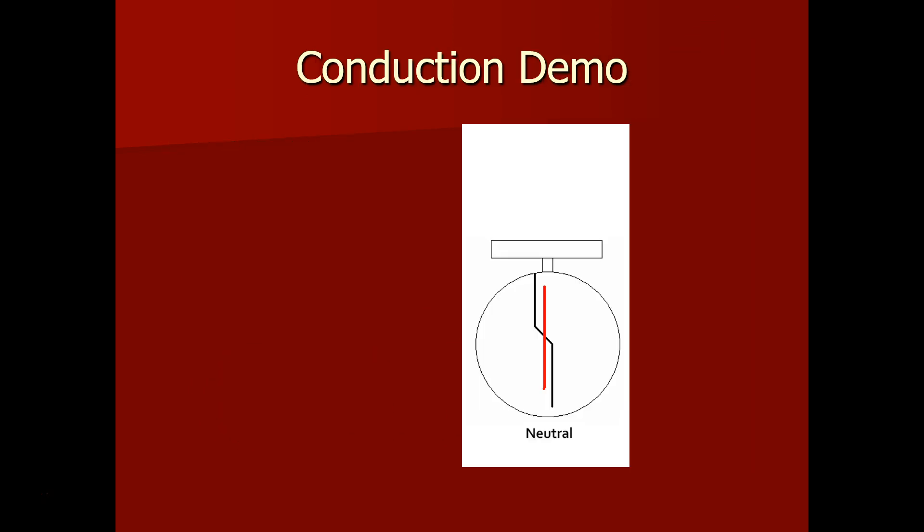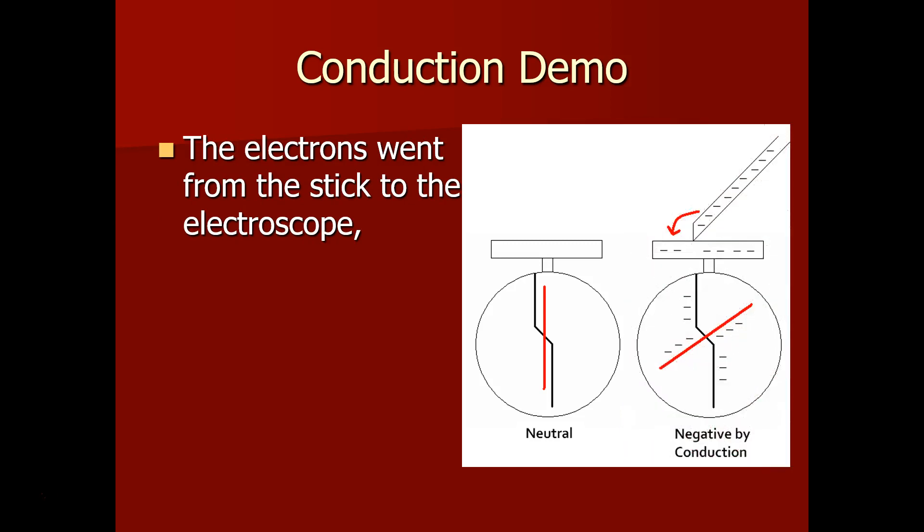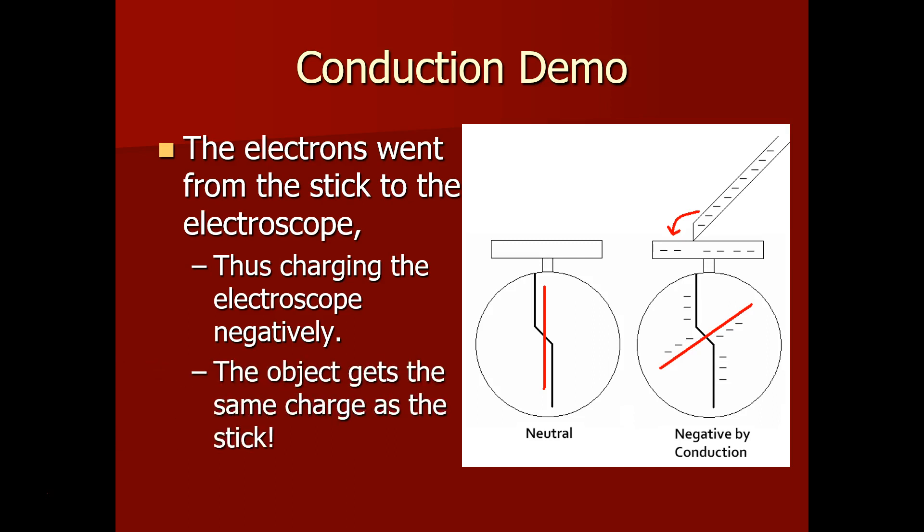Here's a quick example on an electroscope. The electrons went from the stick to the electroscope, making the electroscope negative. Because we made contact, the electrons were able to conduct through the electroscope. The object gets the same charge as the stick. So now both inner parts are negative. That's why the electroscope moves.